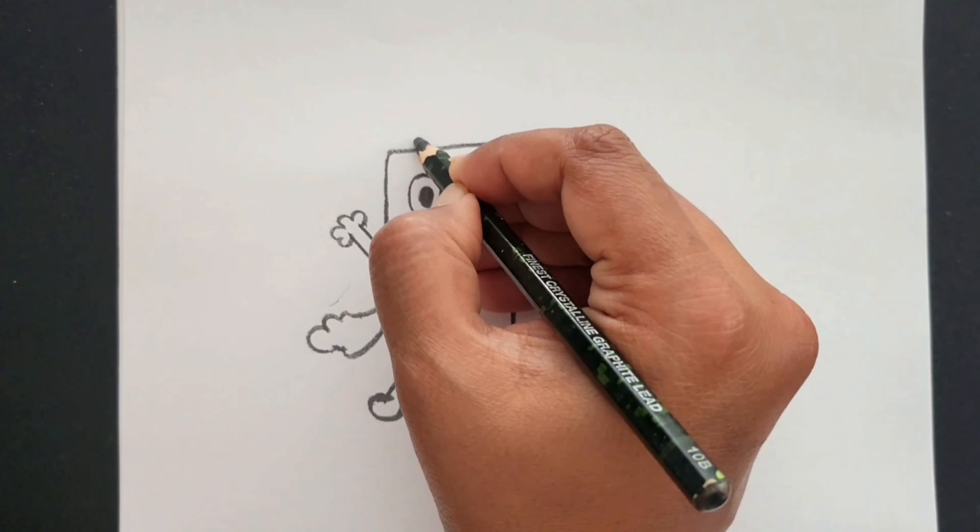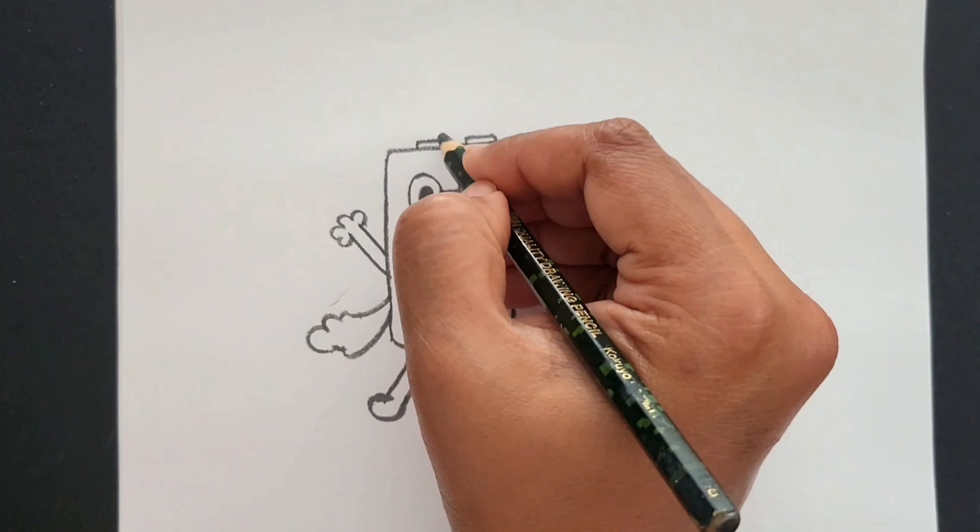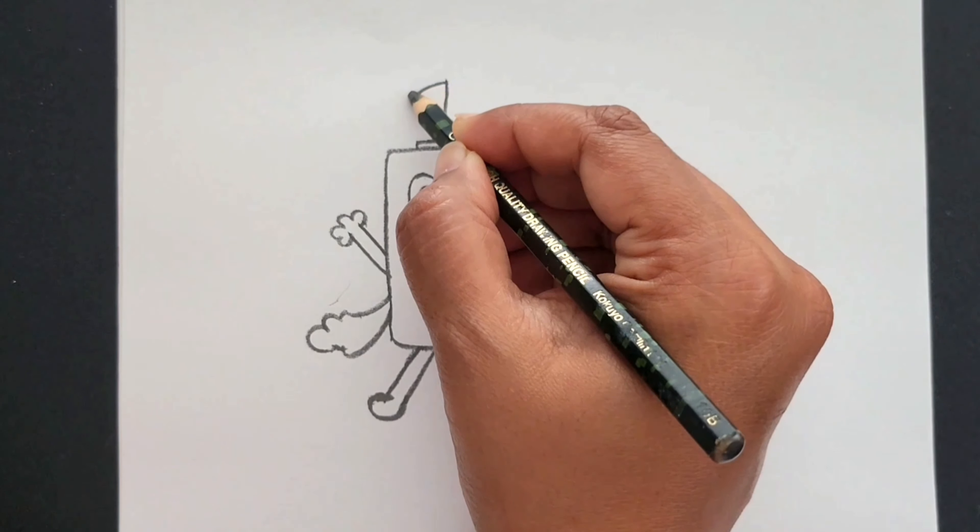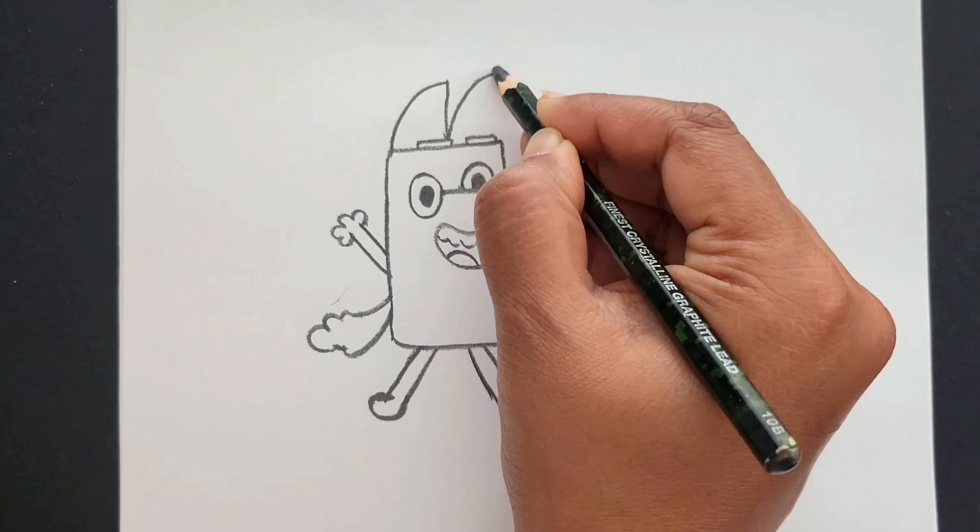Now let's draw eyebrows and then ears. First, starting here, draw a line up and connect it to the left side and repeat the same here.